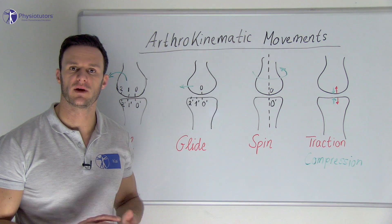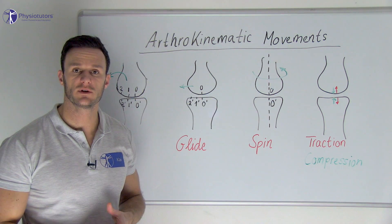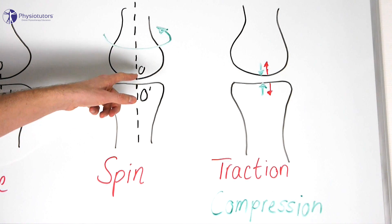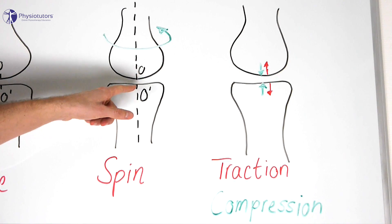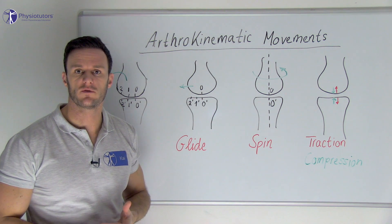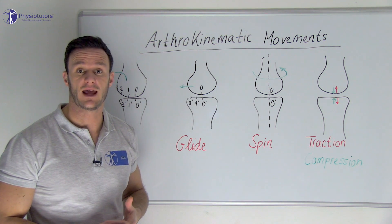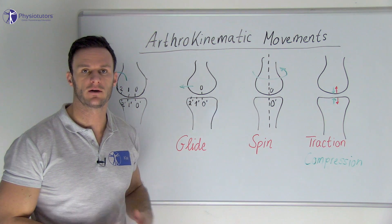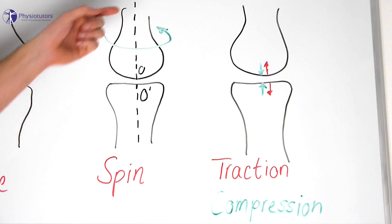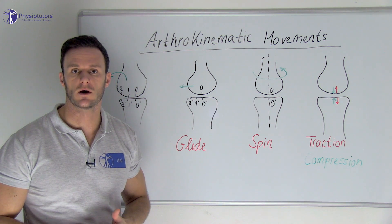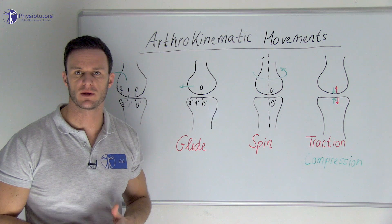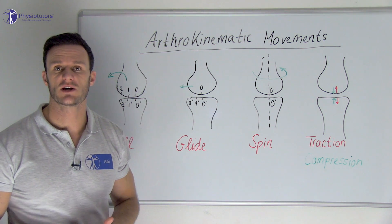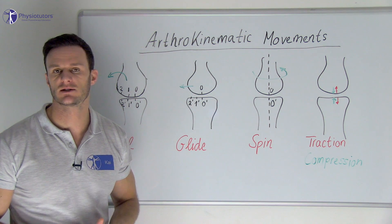In case of a spin movement, one point of the moving joint partner stays in contact with the same point on the surface of the other joint partner. All other points of the moving joint rotate around an axis which is identical with the plumb line through the contact point of both surfaces. Although spinning rarely occurs alone, an example of an impure spin would be during flexion and extension of the shoulder, in which the head of the humerus spins on the glenoid.